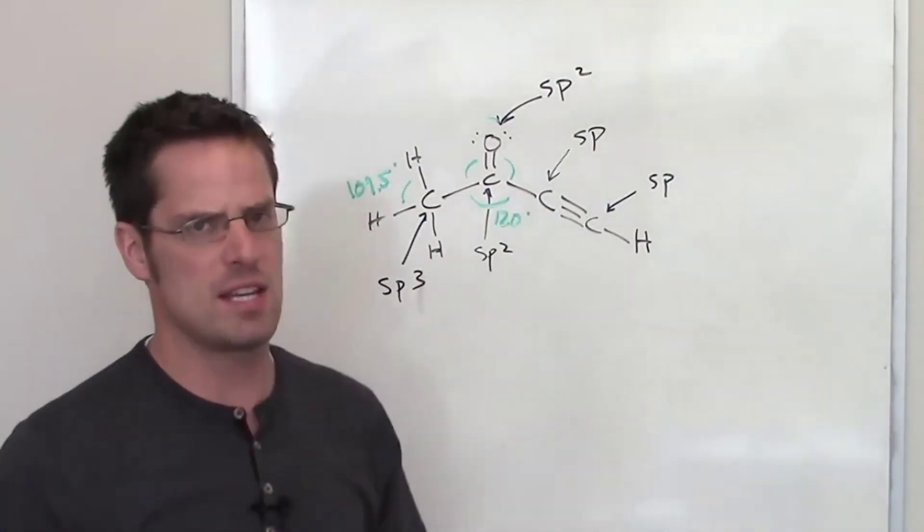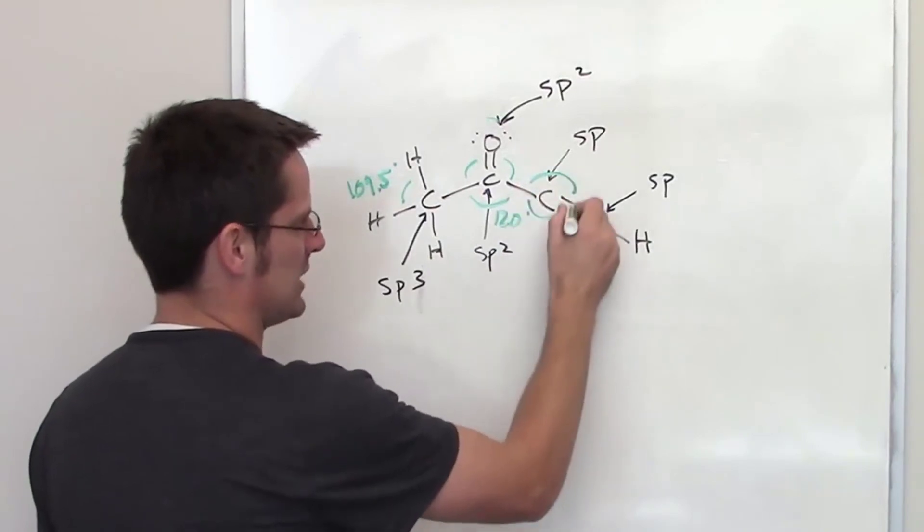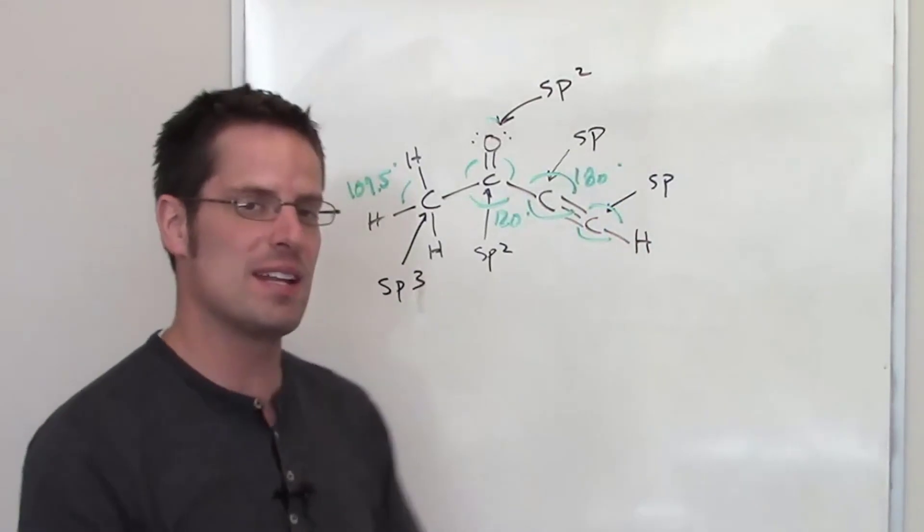but all I'm asking you for is a rough estimate. Around the sp hybridized centers, that actually is 180, straight line around both of them, because the geometry around that is totally linear.